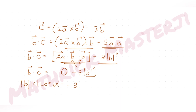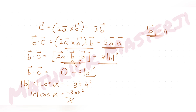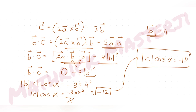Since magnitude of b is 4, we get |b||c|cosα = −3 × 16. Dividing both sides by |b| = 4, we get |c|cosα = −3 × 16 / 4 = −12. So we have our first result: |c|cosα = −12.